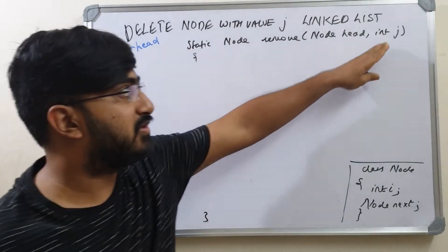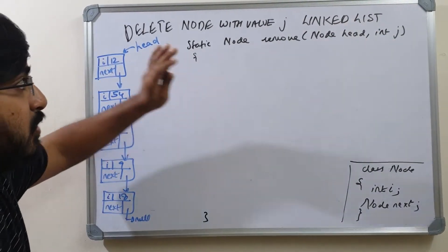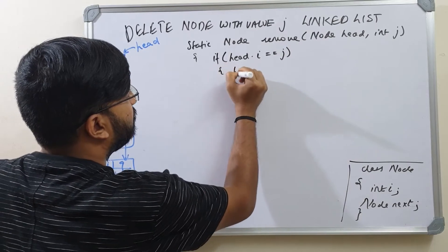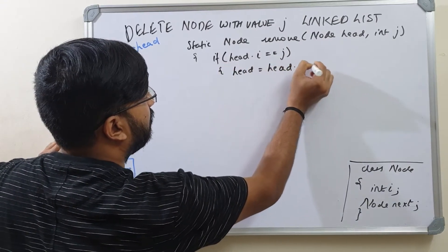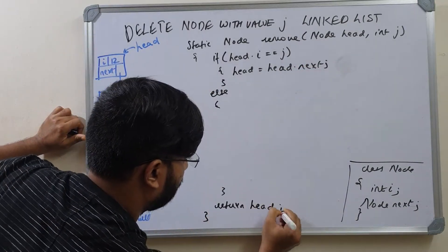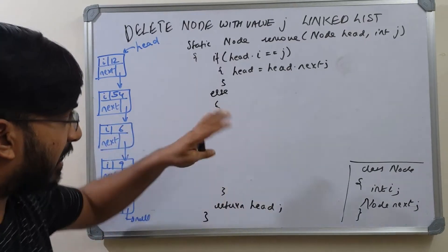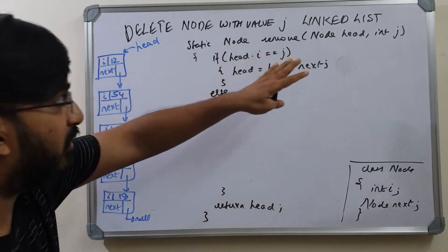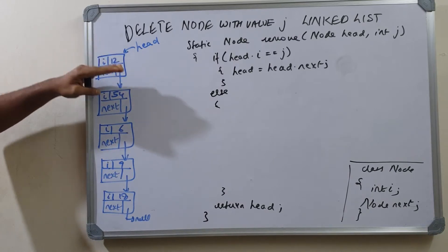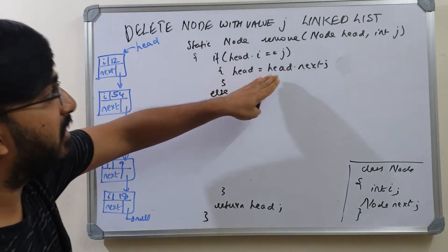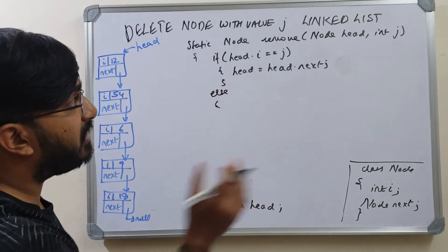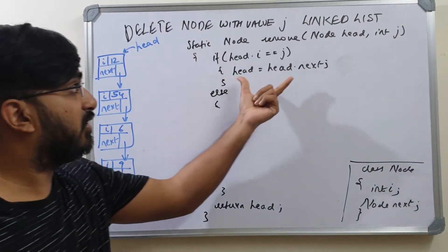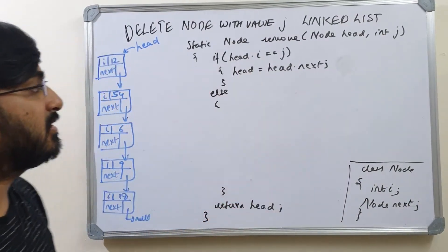We handle this in two cases. First, if head dot i is the value to remove, we simply set head equals head dot next, then return head. Removing the first node is straightforward — just set head to the next of the current head and return the updated head. This handles the case where j was found at the head.